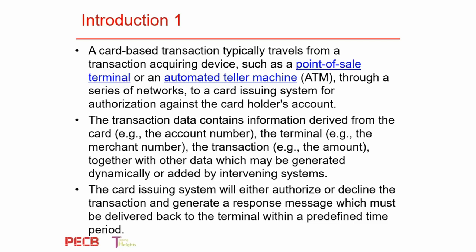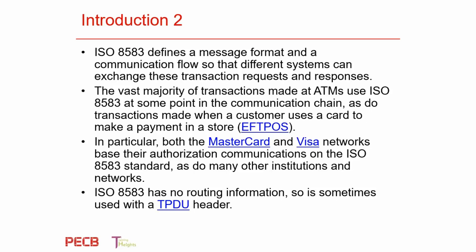The transaction data contains various information: the account number, the terminal, the transaction itself, and other related data. When you put the card into the ATM, it reads off the card, automatically interprets the data, links it to a certain bank account in a certain country, and then processes it. It can decline the transaction, generate a response message, and all this is delivered back to the terminal within the predefined period of time. There's a huge opportunity for auditors in this area.